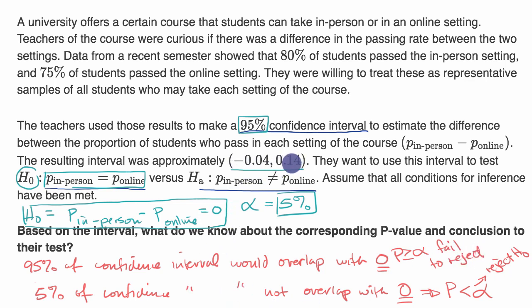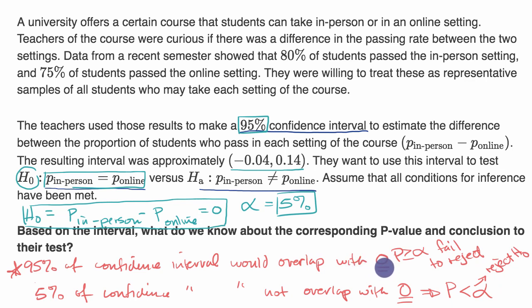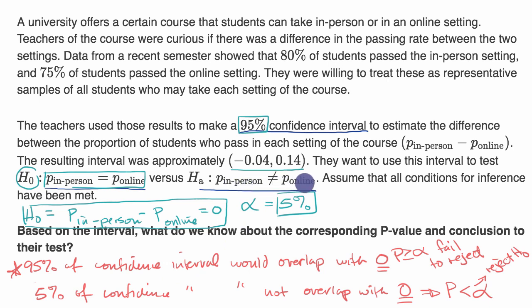In this problem, our interval from negative 0.04 to 0.14 does include zero, the assumed difference from the null hypothesis. So we are in the scenario where p-value is greater than or equal to 5%, and we fail to reject the null hypothesis. There isn't sufficient evidence to suggest a true difference in passing rates between the in-person and the online course.